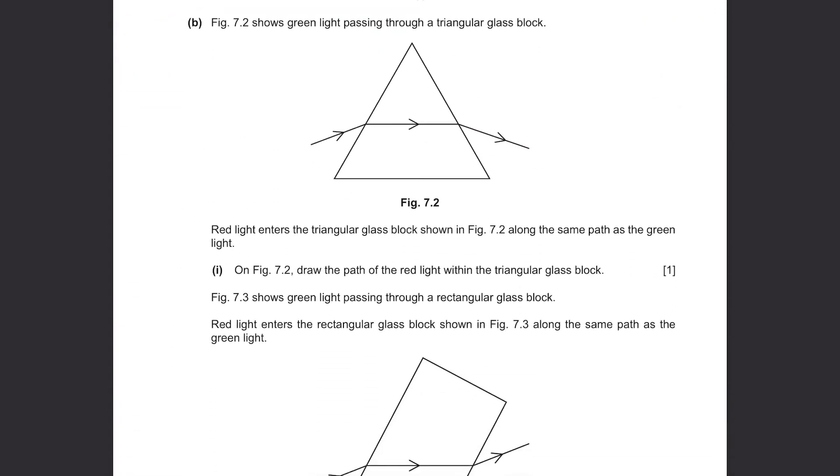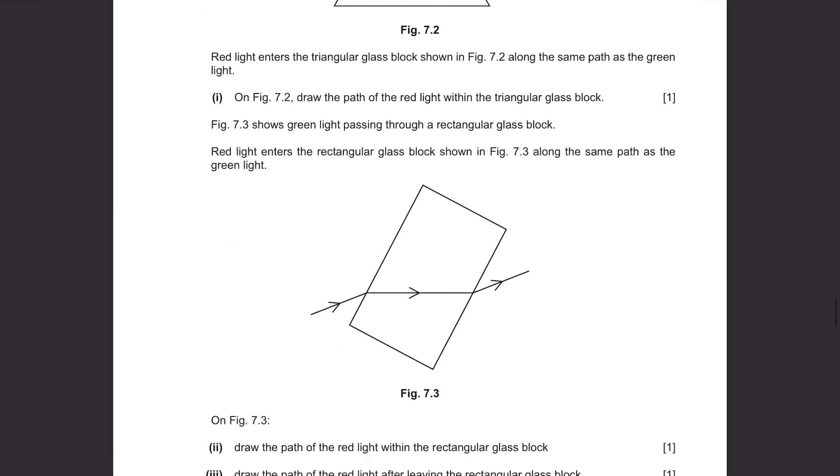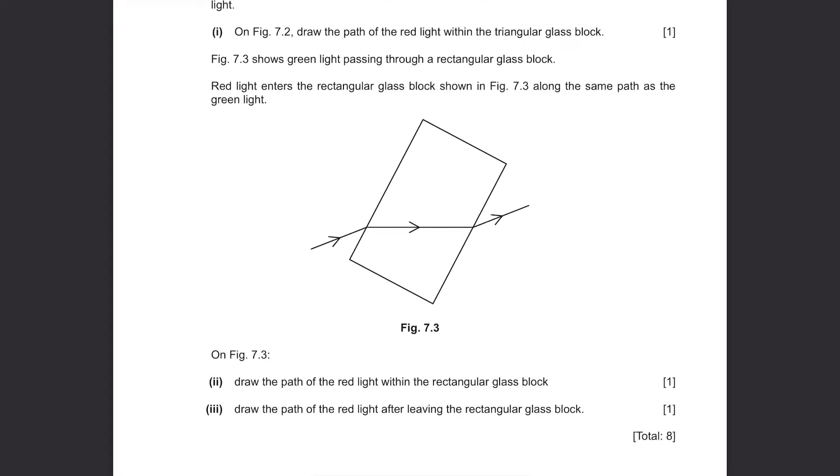Part B. Figure 7.2 shows green light passing through the triangular glass block. Red light enters the triangular glass block shown in Figure 7.2 along the same path as the green light. On Figure 7.2, draw the path of the red light within the triangular glass block. If this is how the green light passes through, how would the red light pass through? Red light will go through less refraction, so it will be a bit above the green ray. Figure 7.3 shows green light passing through a rectangular glass block. Red light enters the rectangular glass block along the same path. It will be refracted less than the green ray, so it's gonna be like this.